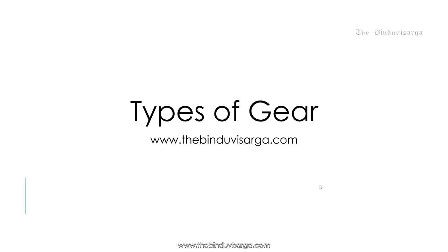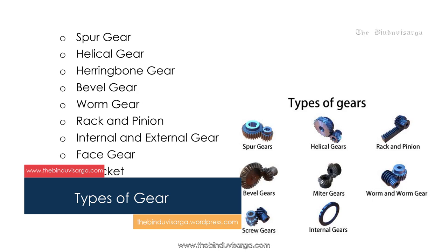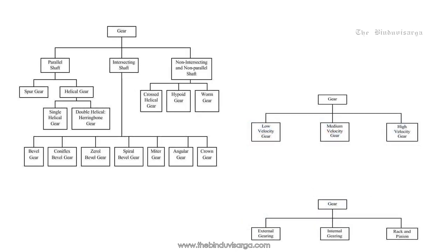Hello, welcome to this video. In this video we will discuss types of different gears. The different types of gear listed are: spur gear, helical gear, herringbone gear, bevel gear, worm gear, rack and pinion, internal and external gear, face gear, and sprocket. In this section we will see the classifications of gear.